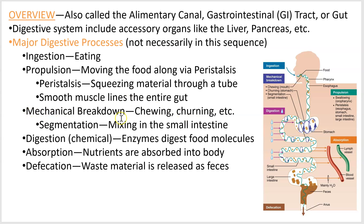Mechanical breakdown starts in your mouth, continues in your stomach, and even occurs in the small intestine. Absorption occurs at various spots — you can actually absorb stuff through your mouth, though food doesn't usually spend enough time there to be of any use. Segmentation is a back-and-forth breakup of food in the small intestine that occurs along with propulsion to keep food moving and mixed.